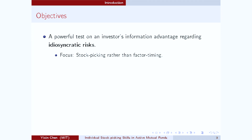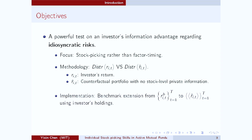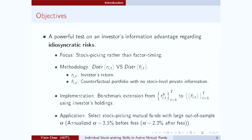I'm going to show you that the key methodology of my test is a comparison between the investor's return distribution and the return distribution of a counterfactual portfolio that picks stocks randomly. And in order to implement my test, we need to extend our benchmark from a time series of returns to a time series of return distributions. In the empirical part, we're going to apply this new test to the active mutual fund industry and identify a group of fund managers who are very skilled at picking stocks and are able to deliver very large out-of-sample alphas.